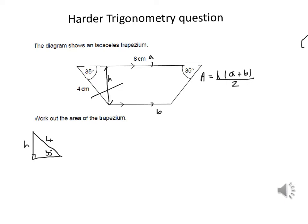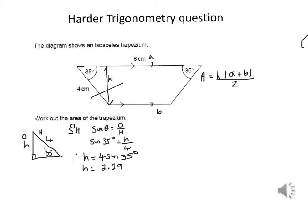The height H is opposite the 35 degrees in the right-angled triangle. The two sides involved are O and H, which means we're using the sine ratio. Writing out the rule: sine theta equals O over H, so sine 35 equals H over 4. Therefore H equals 4 times sine 35. Working that out on a calculator — making sure it's in degree mode — gives a height of 2.29 centimetres.